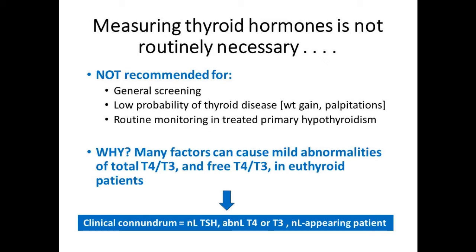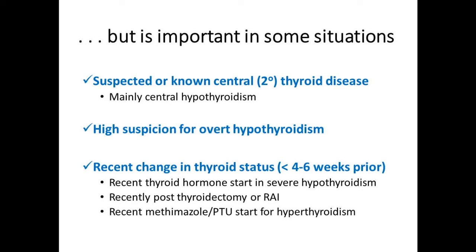We do need to measure thyroid hormones in some situations. If you have a patient with suspected or known central or secondary hypothyroidism — 95% of hypothyroidism is primary, but 3-5% can be secondary, meaning there's a problem with the signal from the pituitary gland — folks who've had whole brain radiation, another pituitary deficiency like adrenal insufficiency, or a pituitary tumor resected. If you're going to screen them for thyroid disease, you probably ought to do a whole panel because their TSH is always going to be low regardless of their thyroid status, so you need to rely on the T4.